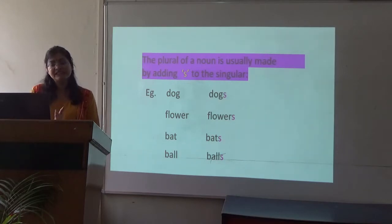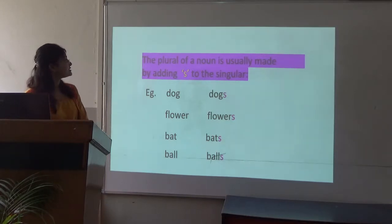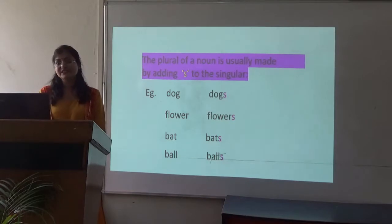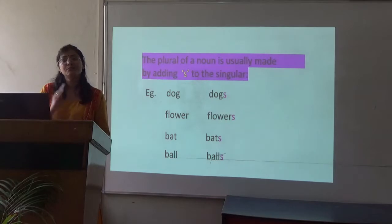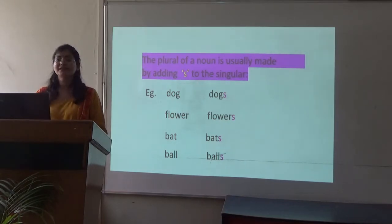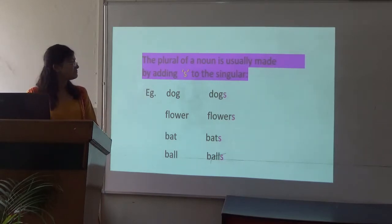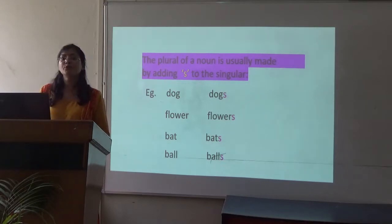Now we will see how to make a plural out of a singular noun. The plural of a noun is usually made by adding -s to the singular — this is a general rule. There are so many nouns whose plural we make by adding -s after the word. For example: dog → dogs, flower → flowers, bat → bats, ball → balls. You can see we simply added -s at the end of all these words to make them plural.